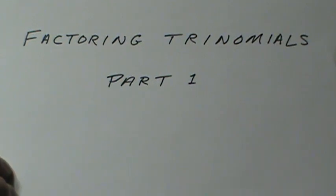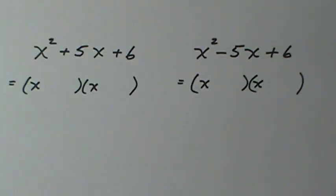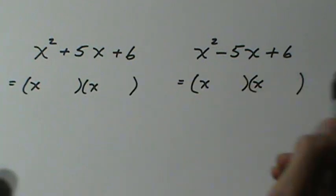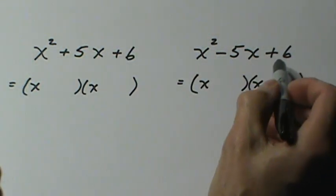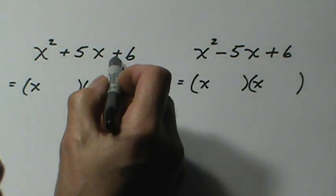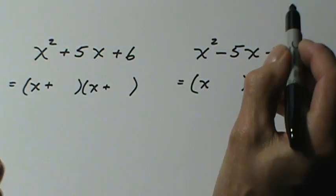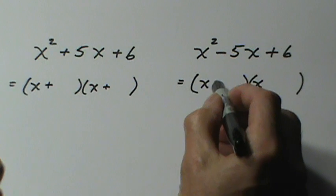Now the first thing you should look at is the plus sign on the end of this. This tells us the signs in the brackets will be identical. In this case both signs will be plus, and in this case both signs will be negative. Negative times a negative gives us a positive, and a positive times a positive gives us a positive.